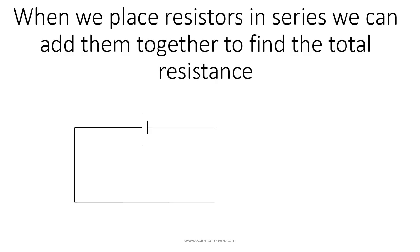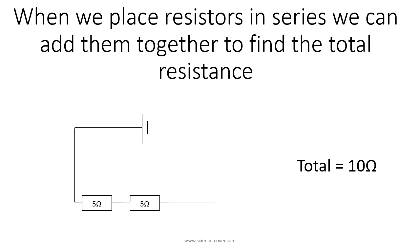When we place resistors in series, we can add them together to find the total resistance. If I place a 5 ohm resistor in the circuit, the total resistance is 5 ohms. If I add another 5 ohm resistor, I now have two 5 ohm resistors so the total resistance is 10 ohms. If I add a third resistor — say a 2 ohm resistor — I now have a 5 ohm, a 5 ohm, and a 2 ohm resistor. The combined resistance is 12 ohms.